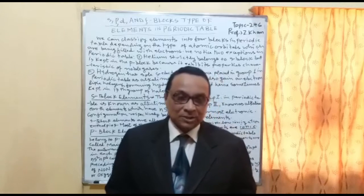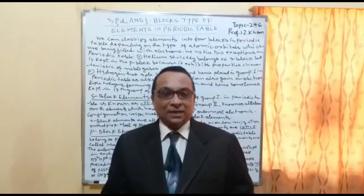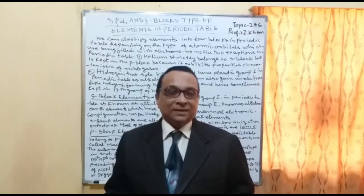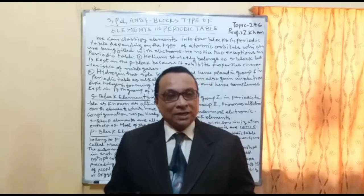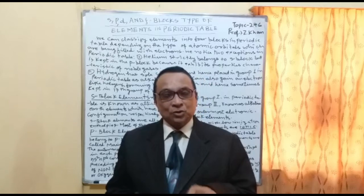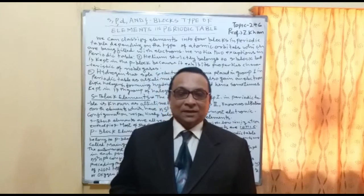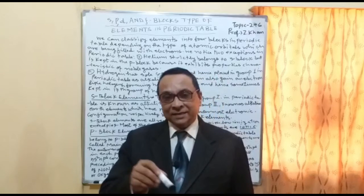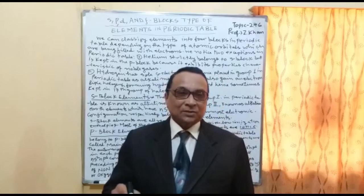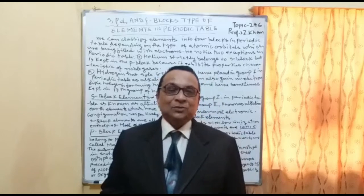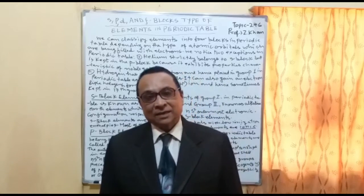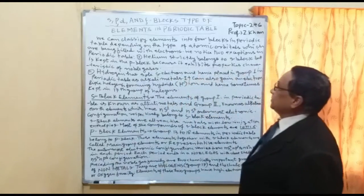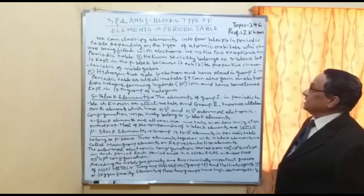That's why they are called the metallic group. The others are P, D and F block elements because in those orbitals — P orbitals, D orbitals and F orbitals — they are incomplete. In their outer shells, those electrons are incomplete, that's why they are known as S, P, D and F block elements in the periodic table.